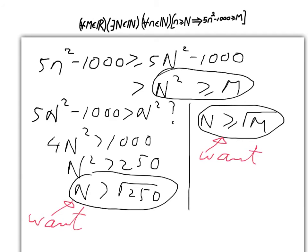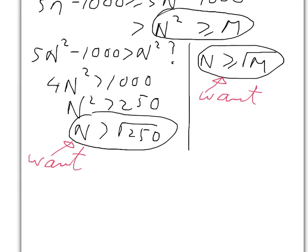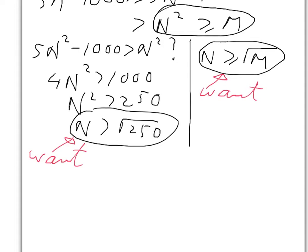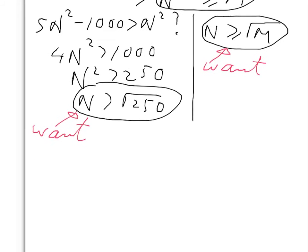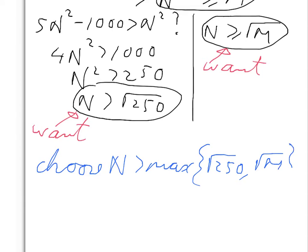So once we have these two things, this one and this one, then the inequality goes right through, and we're able to get exactly what we want. So all we have to do is choose our capital N so that both of those things happen. And the simplest way that I can think to do that is to just simply choose capital N to be bigger than the maximum of those two numbers, the maximum of root 250 and root M. So in that way, both of those inequalities will be true, and we can make everything work from there.